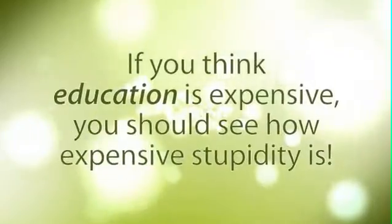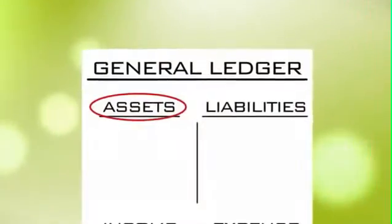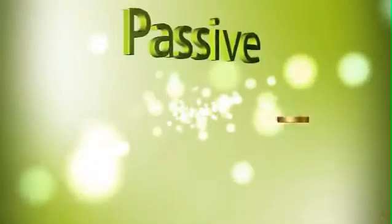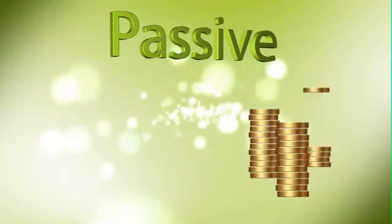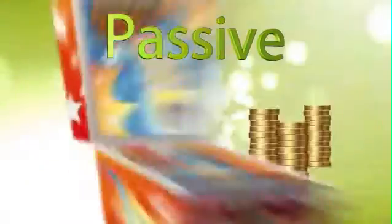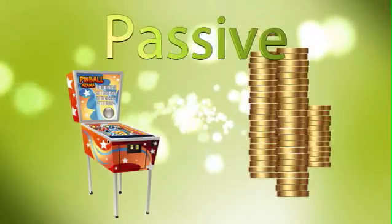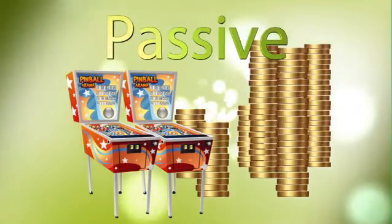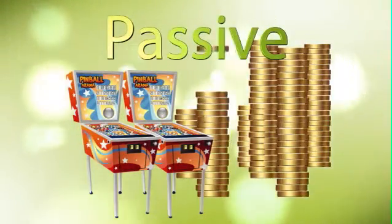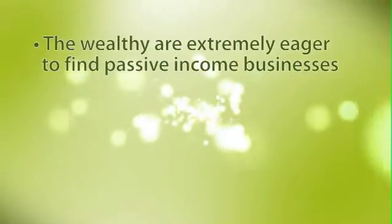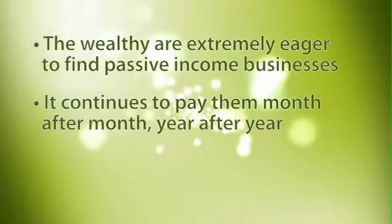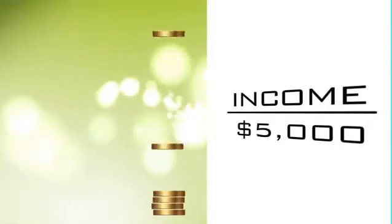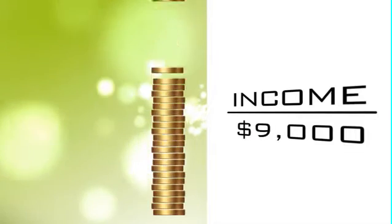I heard a great expression once: if you think education is expensive, you should see how expensive stupidity is. Another example of assets you can buy that pay you is businesses, especially those that can create a passive income — passive meaning that once you build it up, it pays you whether you're still building it or not. A little example: if you buy a pinball machine and put it in a barbershop, you don't spend any of the profits. You save them until you can buy another pinball machine and put it in another barbershop. This, by the way, was Warren Buffett's first business — one of the top two richest men in America. The wealthy are extremely eager to find passive income businesses because it continues to pay them month after month, year after year, long after they've stopped working the business. That's actually the way I created my millions.